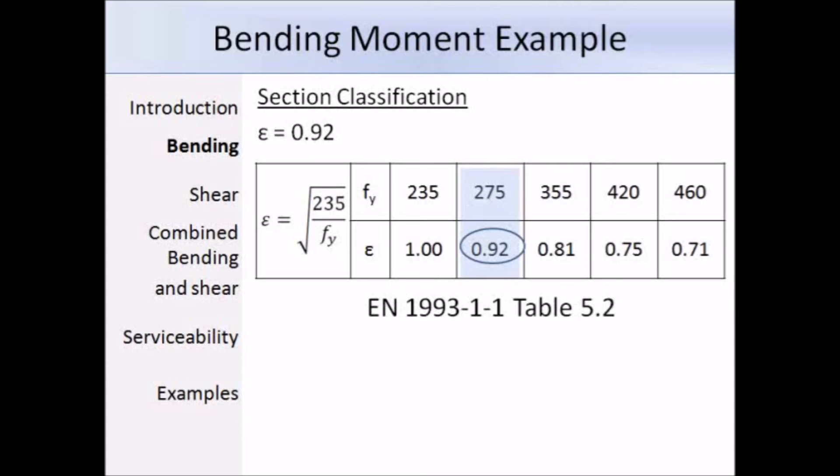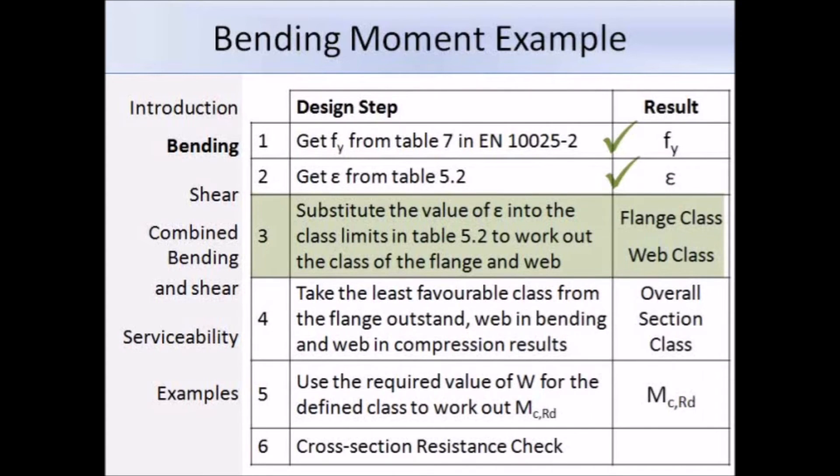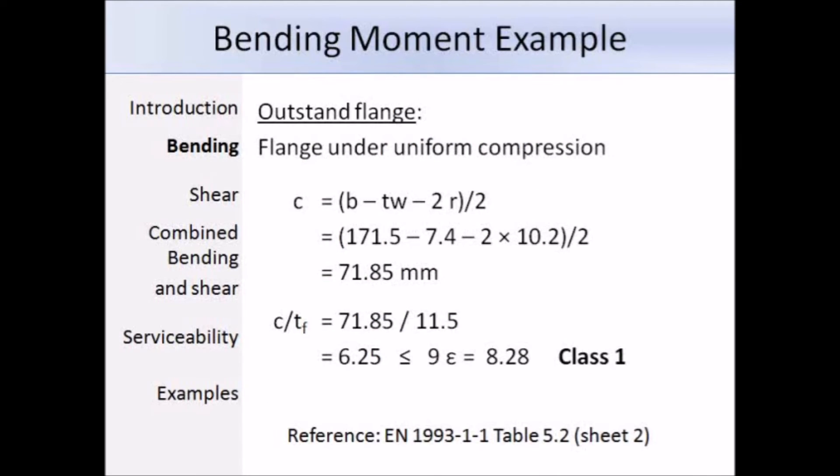Now that we have epsilon, the next step is to substitute it into the class limits so that we can determine the class of the section. First of all we're going to deal with the outstanding flange, which is on sheet 2 of table 5.2. We have to determine the width-thickness ratio, and for that we need the value of c. We use this expression: c equals (b minus tw minus 2r) all over 2. That's slightly larger than the capital B over W that you would have used in BS 5950. Substituting in the values, we get c equals 71.85. We divide that by the flange thickness TF which is 11.5, and then we get 6.25. The class 1 limit of the flange outstand is 9ε, and that's equal to 8.28. Since the width to thickness ratio is less than the class 1 limit, the outstand flange is class 1.